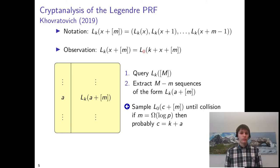Now if our sequences are long enough, then probably the arguments to the Legendre symbols must be the same, which means that the offset c must be equal to k plus a.